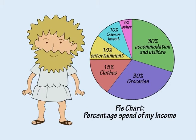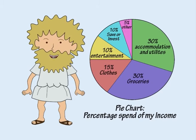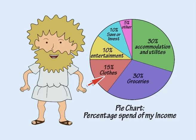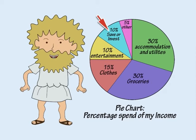Finally, a pie chart is usually used to show data in the form of percentages. For example, this pie chart shows the percentage of my income spent on different things. What percentage of my income do I spend on groceries? 30%. What percentage of my income do I spend on clothes? 15%. And what percentage of my income do I save or invest? 10%.